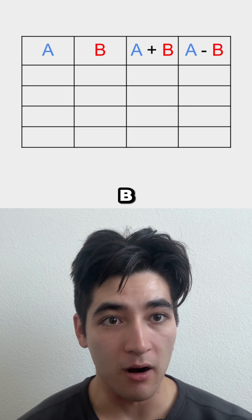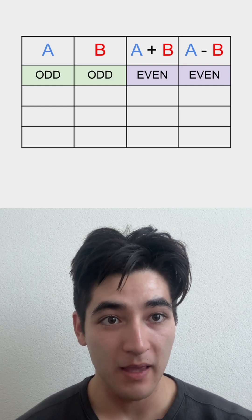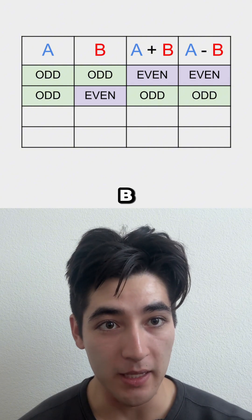If a and b are odd-odd, both a plus b and a minus b are even. If a and b are odd-even, both a plus b and a minus b are odd.